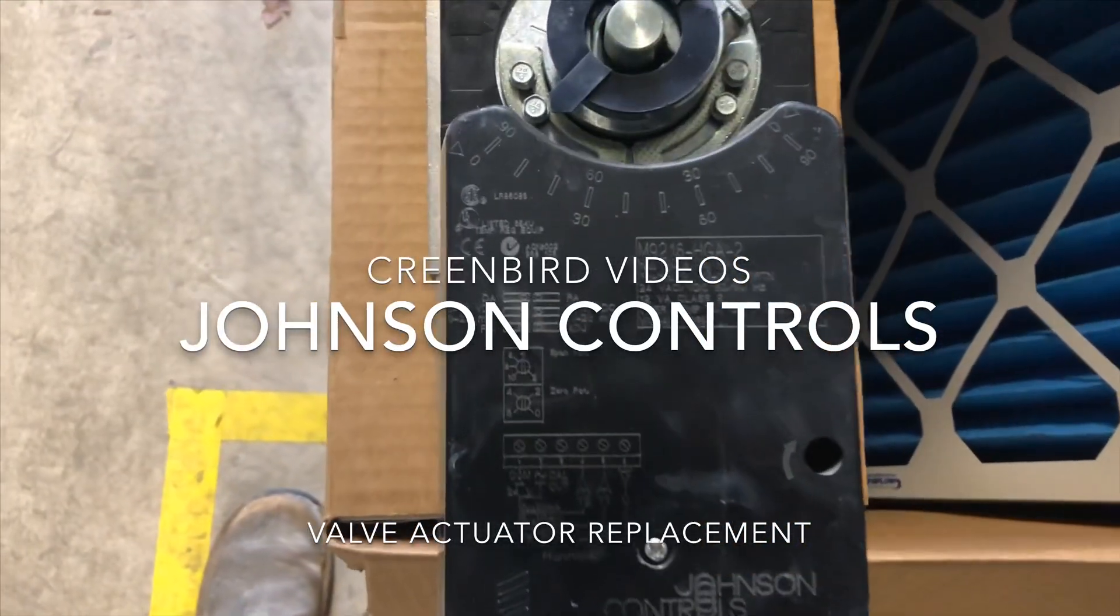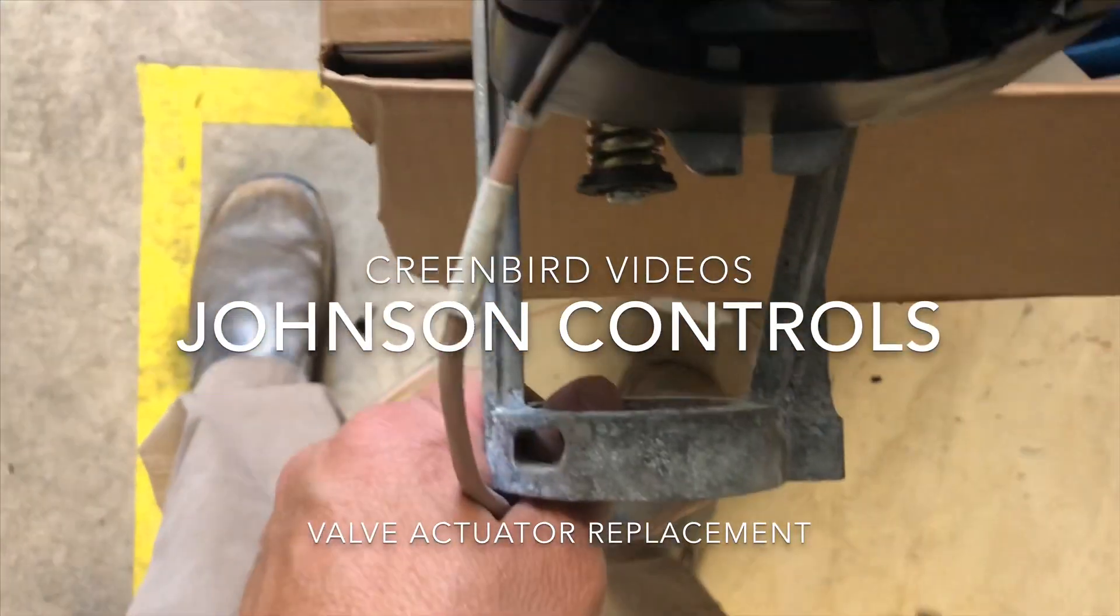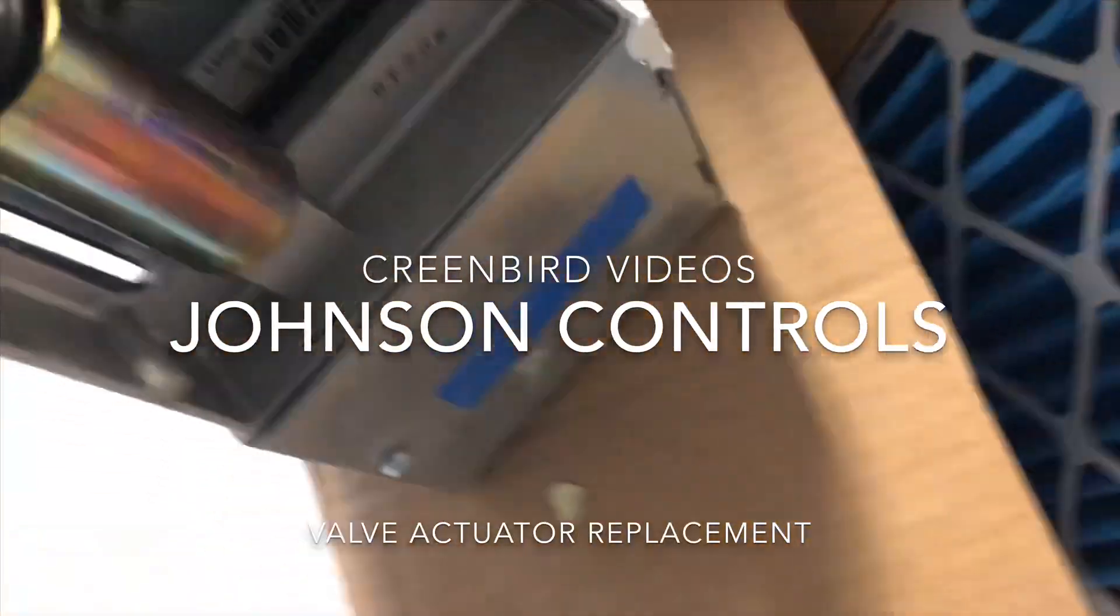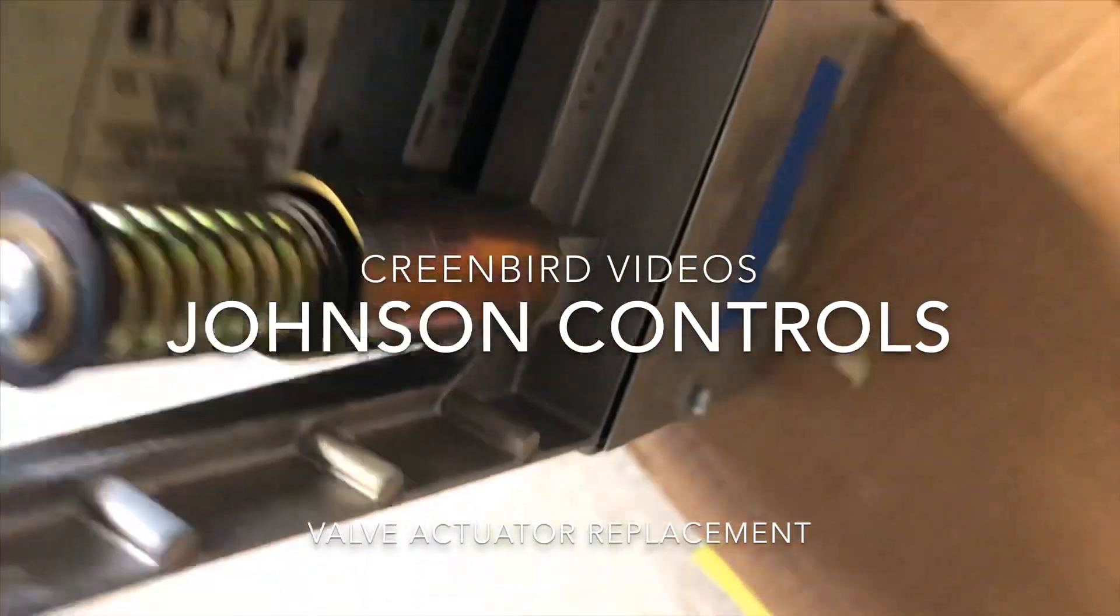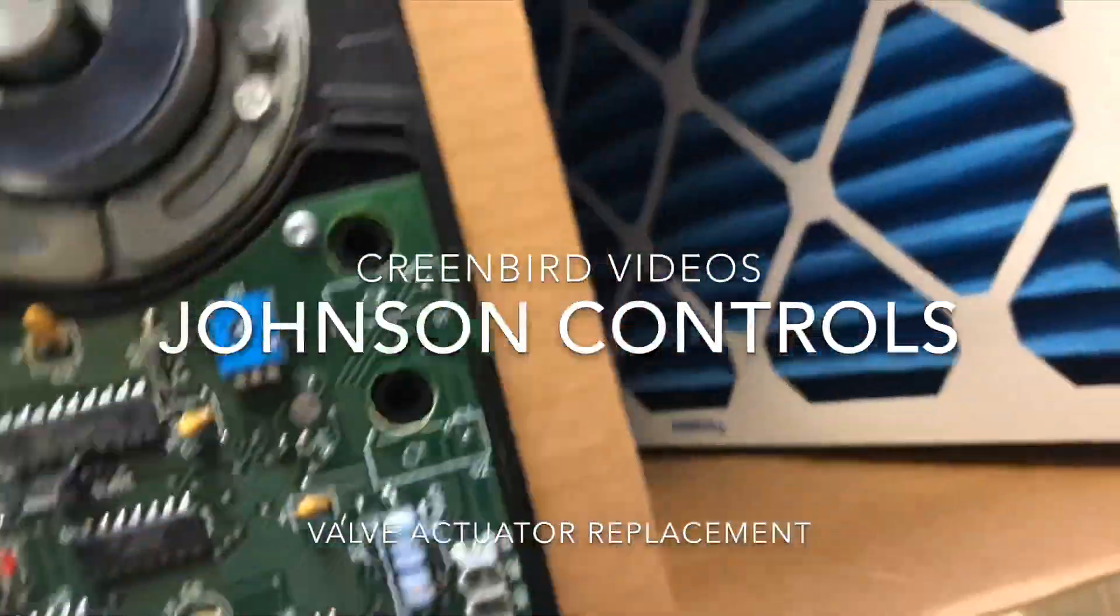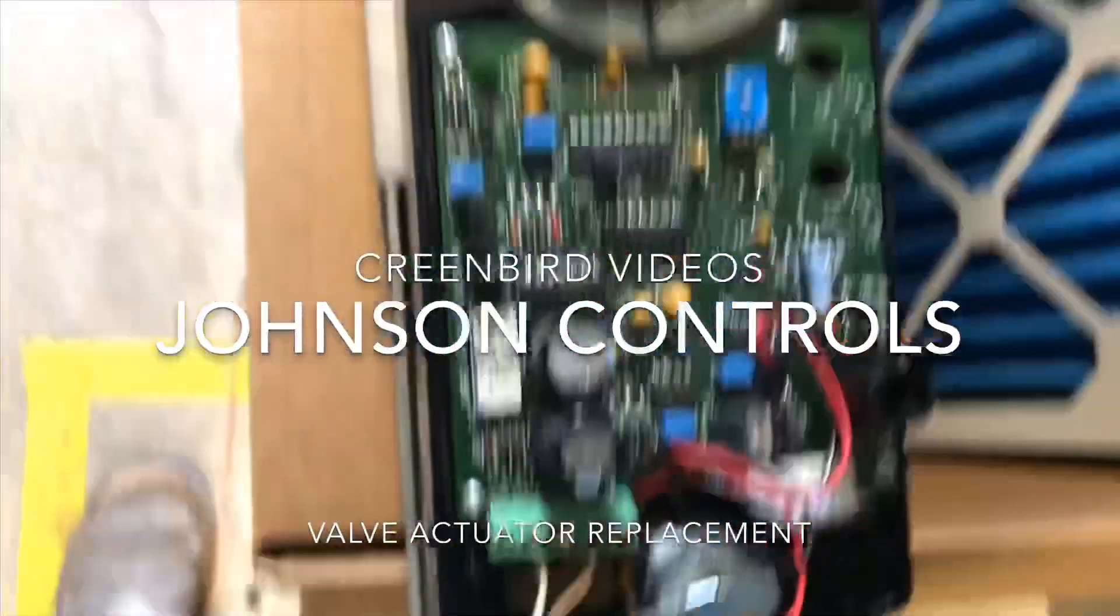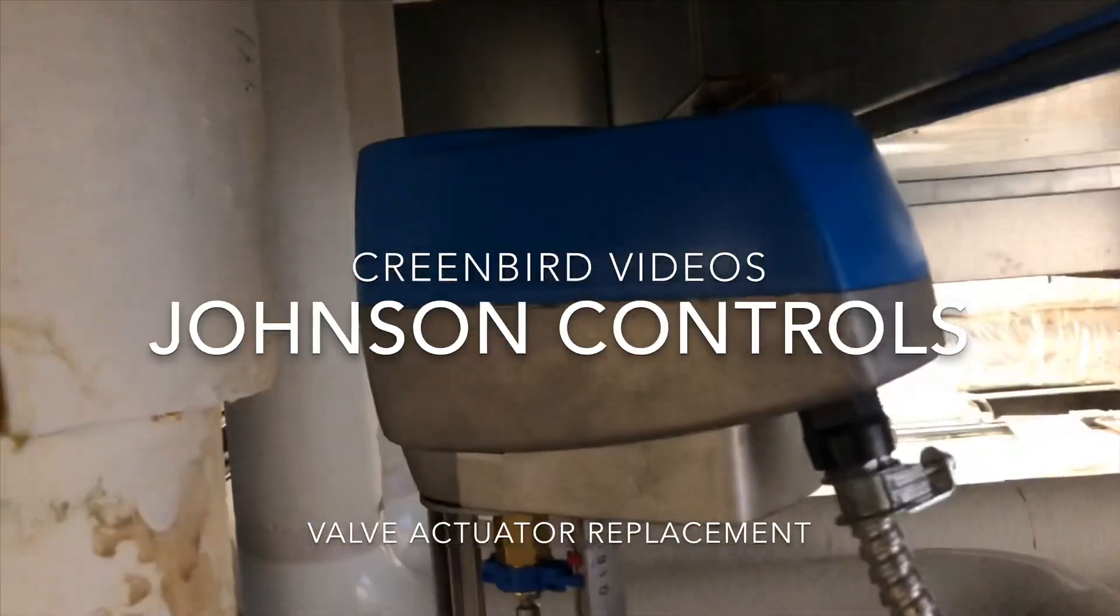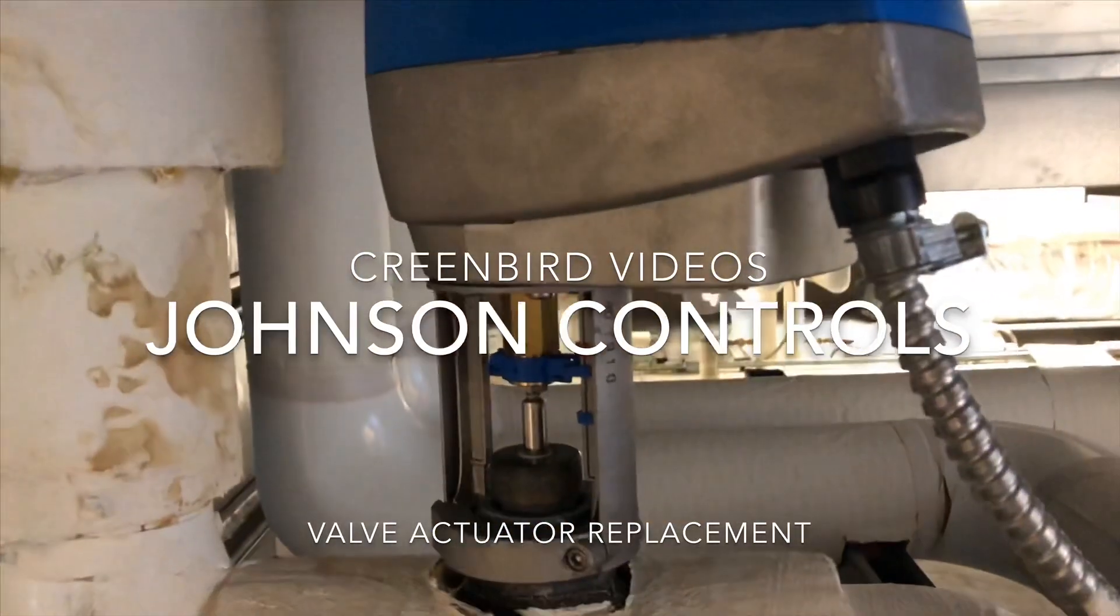Today we're going to show you how to take this old Johnson actuator off. This old gearbox model that you can no longer get. These are actuators like cooked, it's not working. And we're going to replace it with this actuator, newer style self-calibration model.